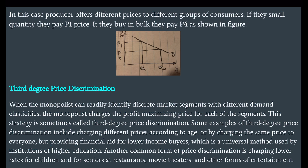Third degree price discrimination: when the monopolist can readily identify discrete market segments with different elasticities, the monopolist charges the profit-maximizing price for each segment. Examples of third degree price discrimination include charging different prices according to age, or providing financial aid for lower-income buyers — a universal method used by institutions of higher education. Another common form is charging lower rates for children and seniors at restaurants, movie theaters, and other forms of entertainment.